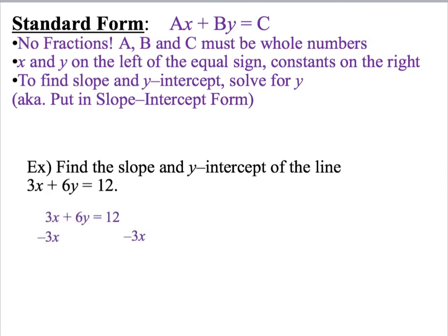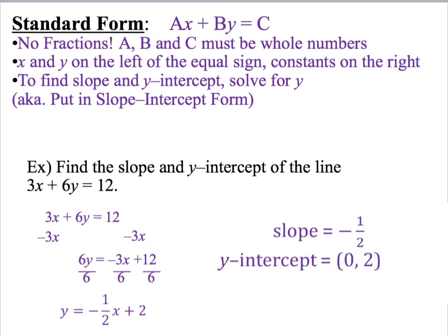So the first thing I'm going to do is subtract 3x from both sides of my equation, and that gives me 6y equals negative 3x plus 12. If I divide all of my pieces by 6, then my equation in slope intercept form is y equals negative 1 half x plus 2. Now that I have it in slope intercept form, it's really easy for me to identify that my slope is negative 1 half, and that my y intercept is at 0, 2.